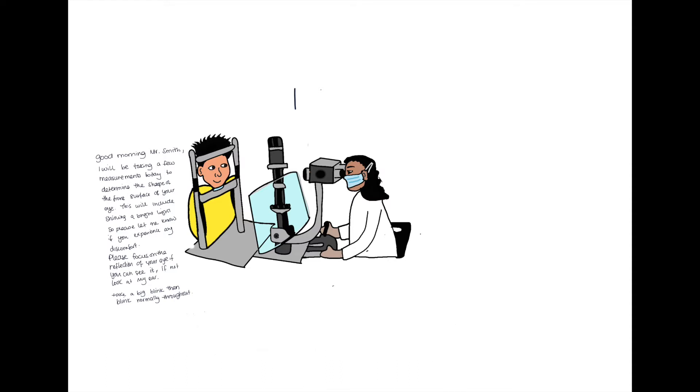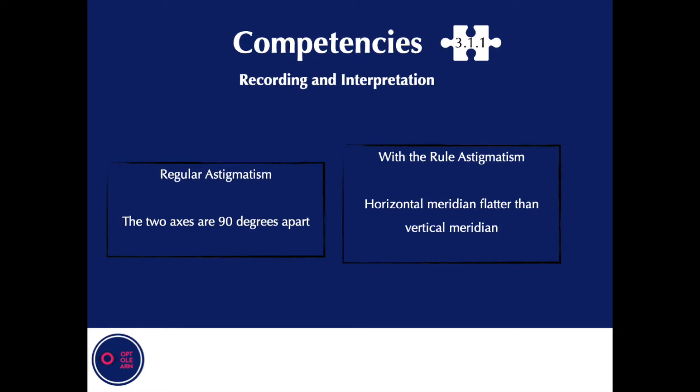When it comes to the interpretation of the information gathered, remember: if the two axes are 90 degrees apart, this represents regular astigmatism. If the horizontal meridian is flatter than the vertical meridian, then it is classed as with-the-rule astigmatism.